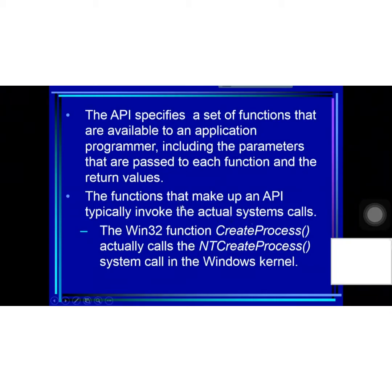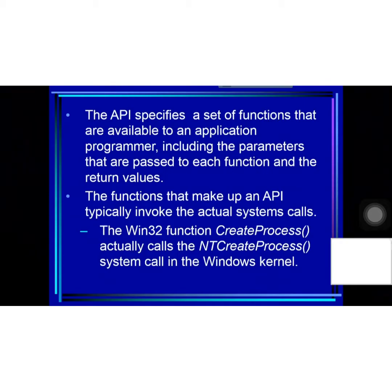The functions that make up an API typically invoke the actual system calls. For example, the Win32 function CreateProcess actually calls the NT CreateProcess system call in the Windows kernel.